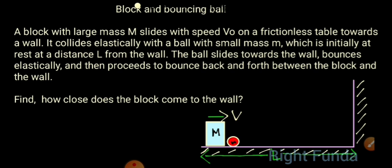A block with large mass M slides with speed V₀ on a frictionless table towards a wall. It collides elastically with a ball of small mass m, initially at rest at a distance L from the wall. The ball bounces elastically and then proceeds to bounce back and forth between the block and the wall. Find how close the block comes to the wall.